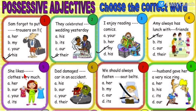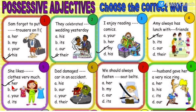Number five: she likes dash clothes very much. Again it is about a girl. Options are her clothes, our clothes, your clothes, or its clothes. For a girl we write 'her clothes.' So: she likes her clothes very much.